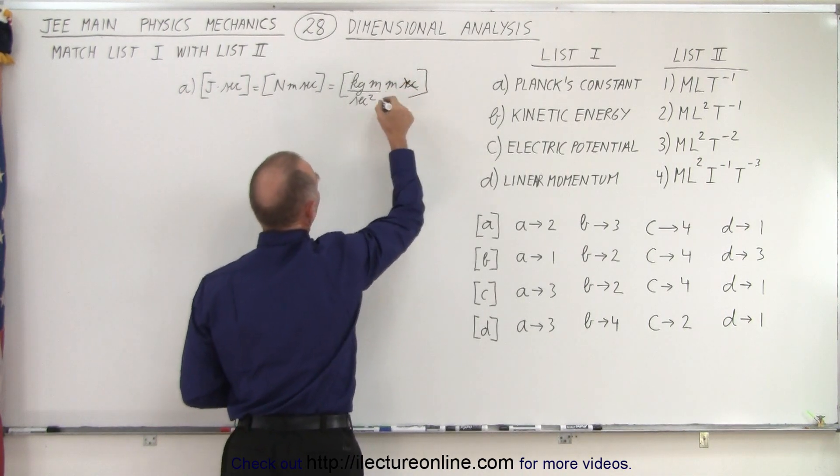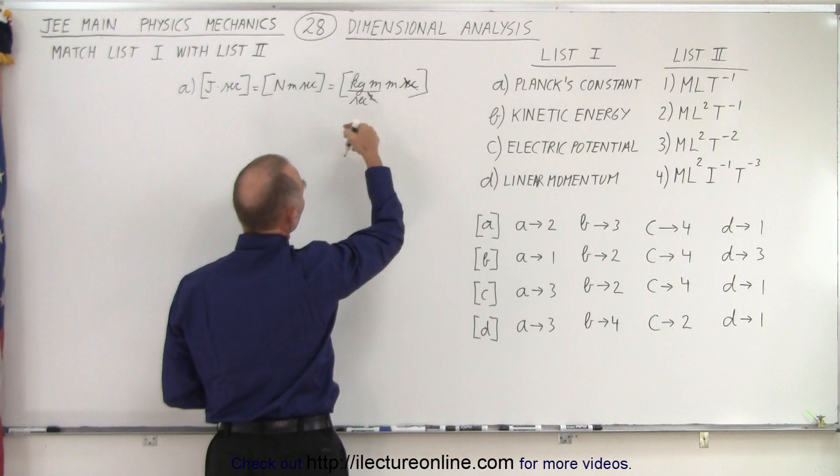So this is the same as a kilogram meter per second squared times meter times seconds. Notice that one of these seconds counts out those seconds. So you have kilograms meters squared per second.